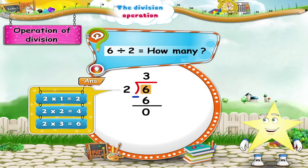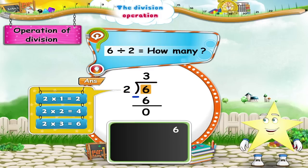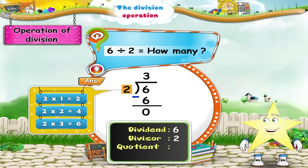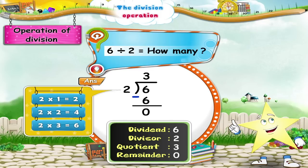So Starry, when we divide 6 by 2: 6 is the Dividend, 2 is the Divisor, the quotient is 3, and the remainder is 0. Wasn't that easy Starry? We are dividing with the help of tables.